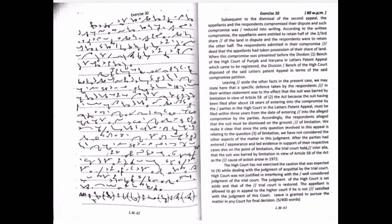Subsequent to the dismissal of the second appeal, the appellants and the respondents compromised their dispute and such compromise was reduced into writing. According to the written compromise, the appellants were entitled to retain half of the two-third share of the land in dispute and the respondents were to retain the other half. The respondents admitted in their compromise deed that the appellants had taken possession of their share of land. When this compromise was presented before the division bench of the High Court of Punjab and Haryana in letters patent appeal, which came to be registered, the division bench of the High Court disposed of the said letters patent appeal in terms of the said compromise petition.